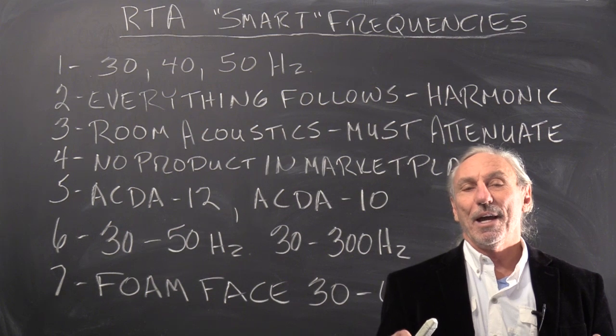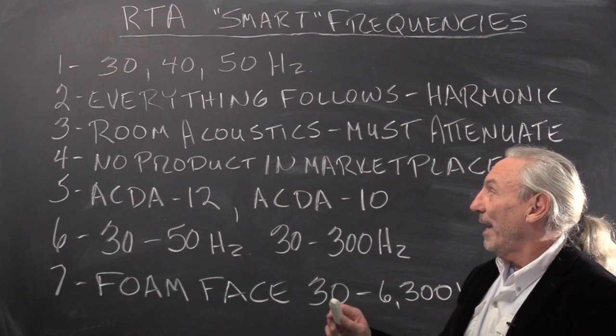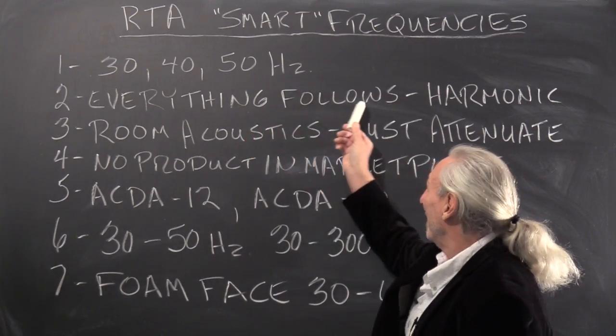Notice in this graphic that the RTA always has start frequencies at 30, 40, and 50 cycles. So that's the foundation we want to use in our room acoustics. We want to realize that everything follows the 30, 40, and 50 cycle fundamentals.